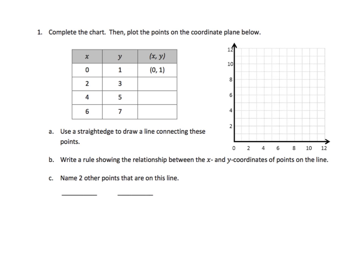Number 1, it says complete the chart, then plot the points on the coordinate plane below. So we'll complete this chart by looking at the x and the y, and just simply putting them into an ordered pair. This is quite simple. So 2 for x and 3 for y becomes the ordered pair 2 comma 3, and similarly here, and the last one.